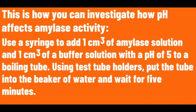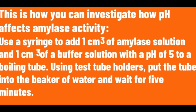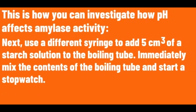Use a syringe to add 1 cm³ of amylase solution and 1 cm³ of a buffer solution with a pH of 5 to a boiling tube. Using test tube holders, put the tube into the beaker of water and wait for 5 minutes. Next, use a different syringe to add 5 cm³ of starch solution to the boiling tube. Immediately mix the contents of the boiling tube and start a stopwatch.